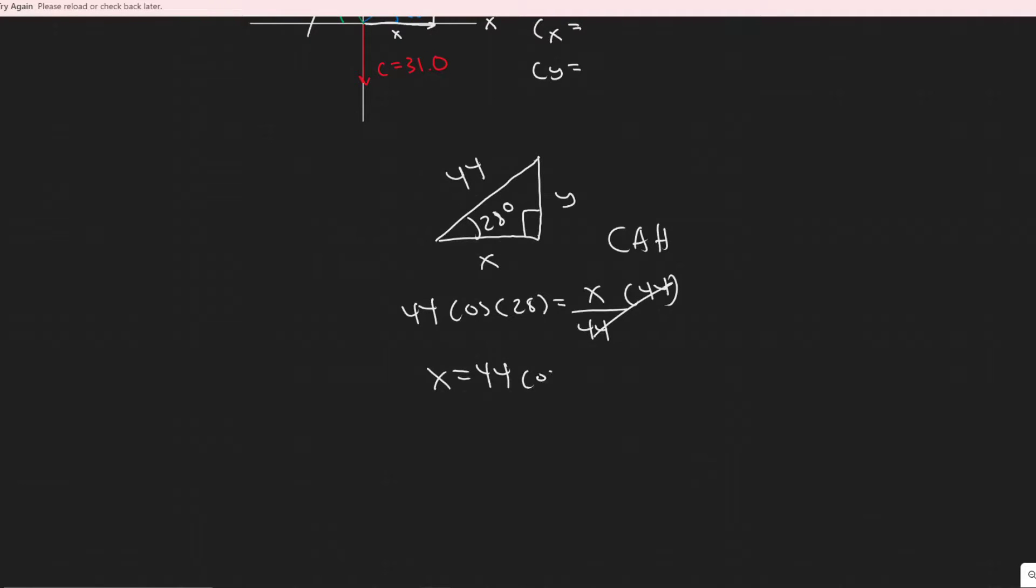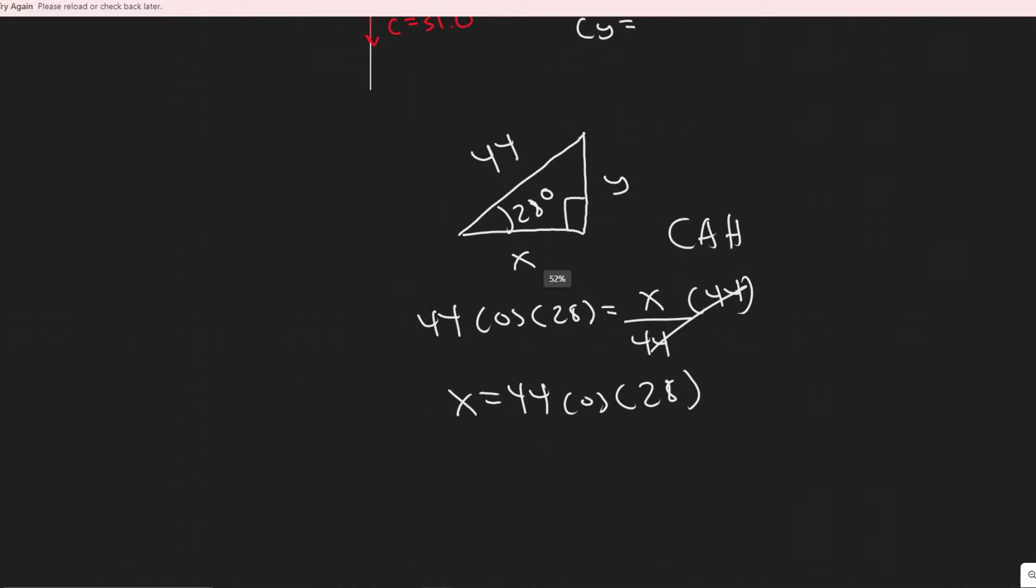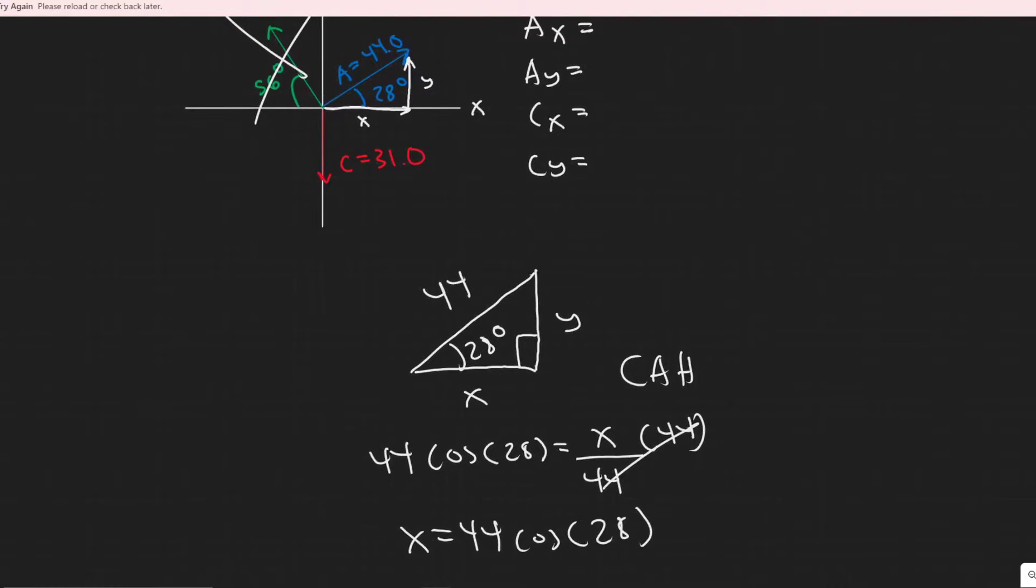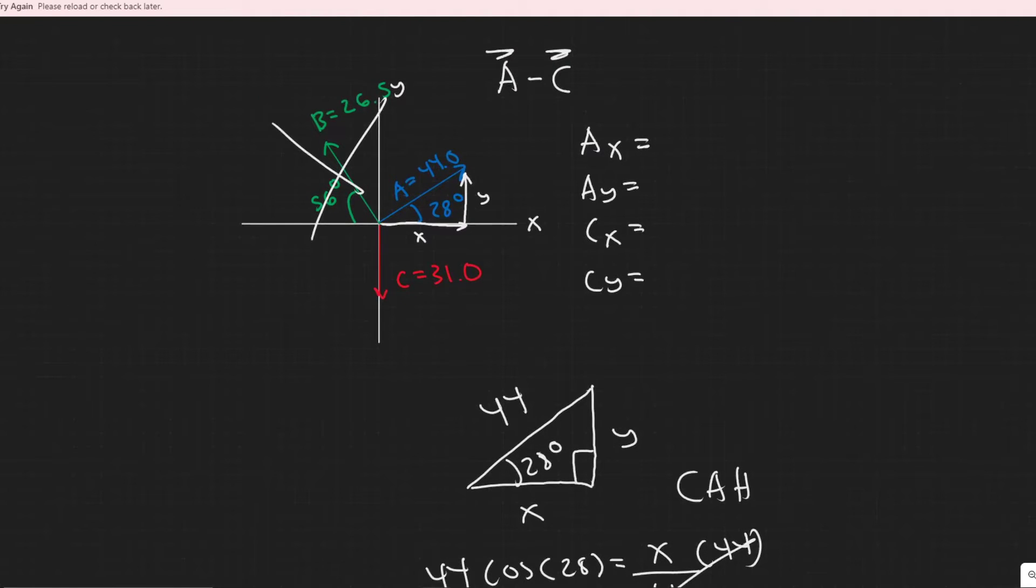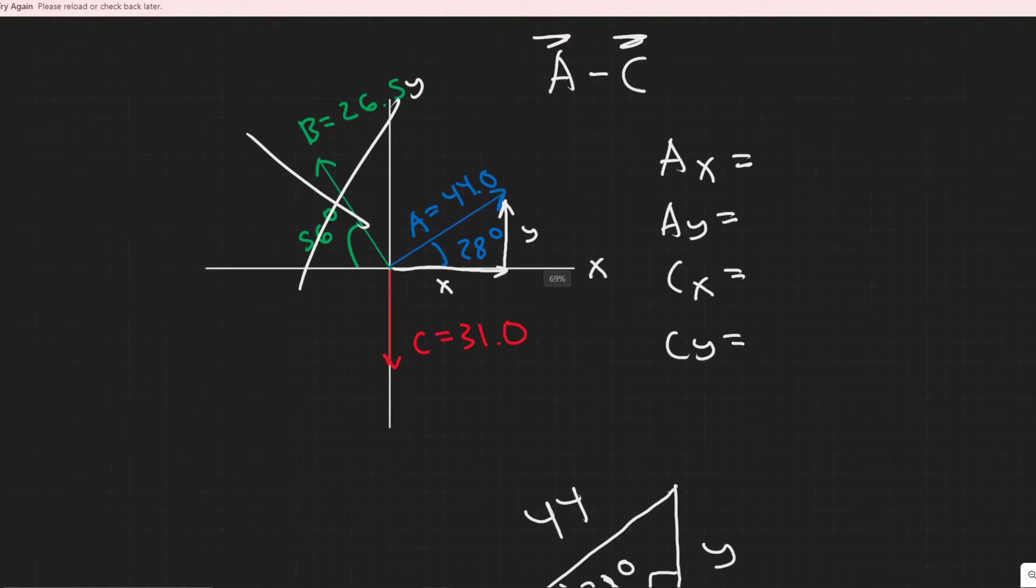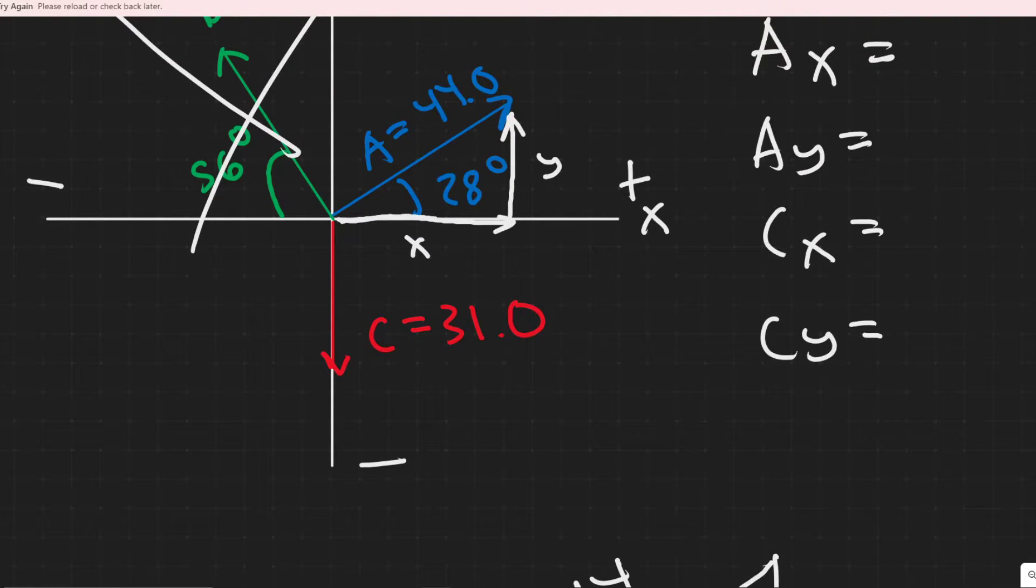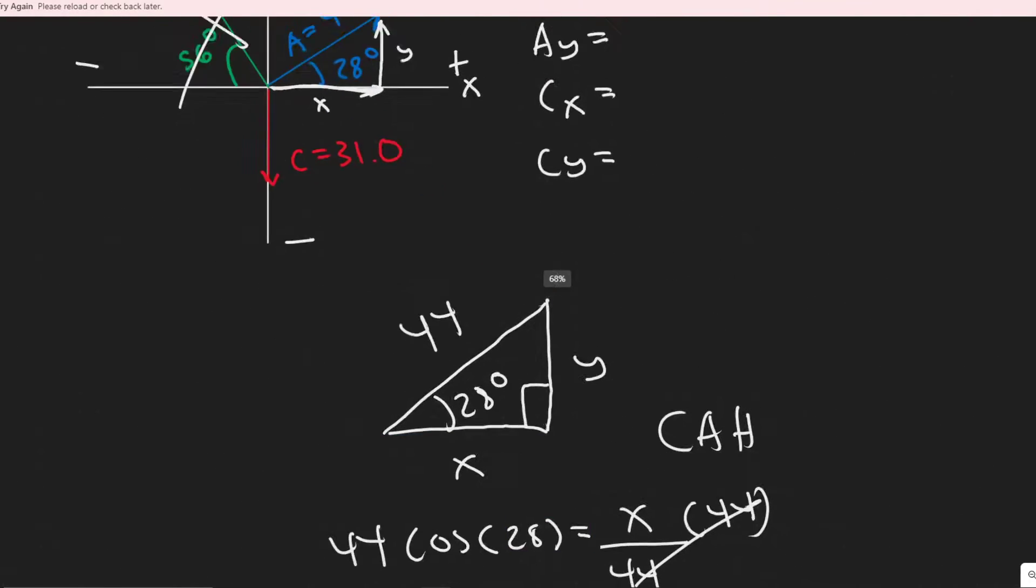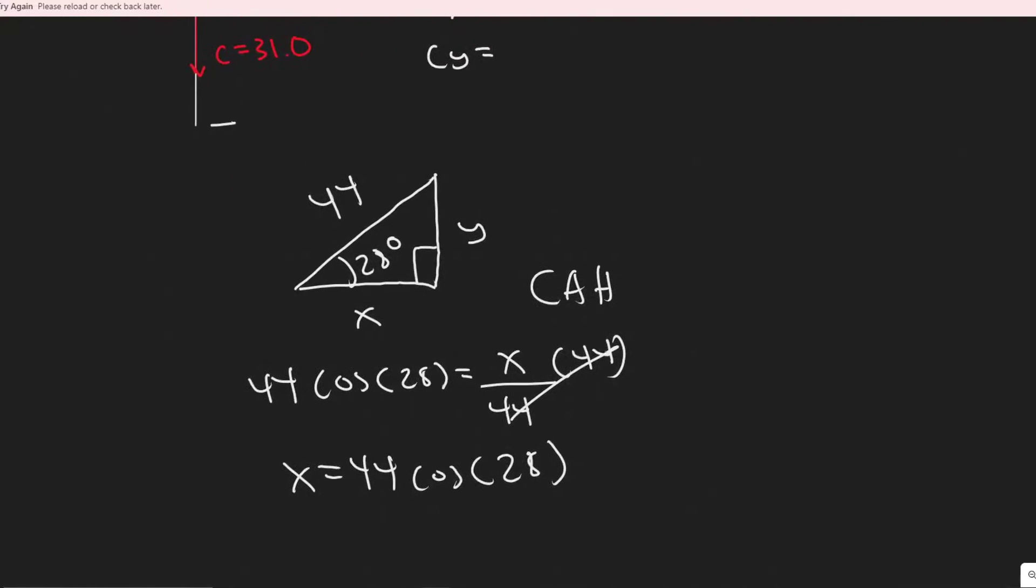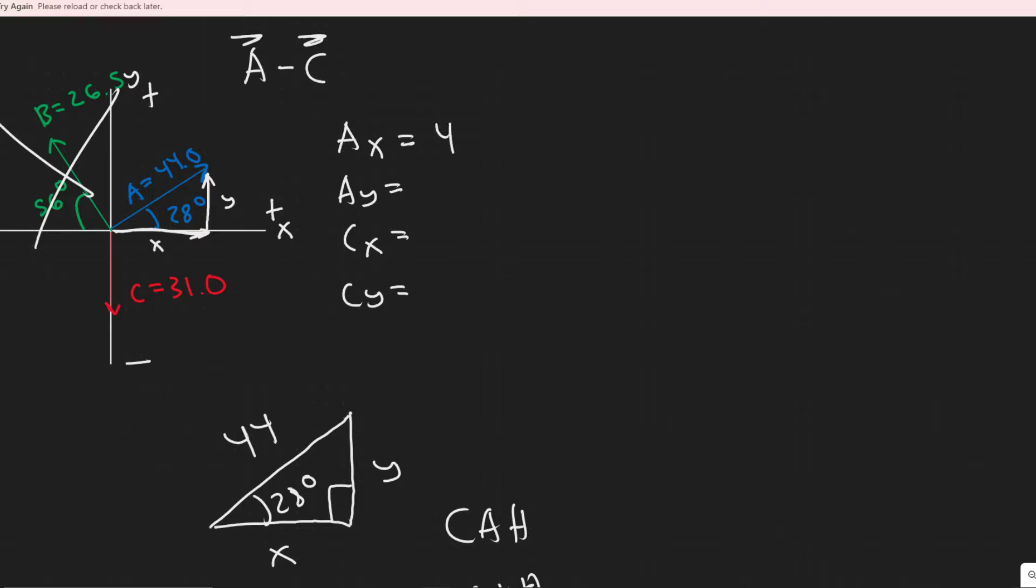That would be the x component of your A vector right there. Keep in mind that when you label it, you want to label it based on its direction. Generally, the way you do it is if it goes to the right, it's positive, left is negative. And then in terms of up and down, you like to label up positive and down negative. So this is your x component. But notice the direction it's pointing, you just follow along the direction the vector points. So the x would be in the positive x direction. So your A of x would just be positive this value. Keep in mind, if it was pointing the other direction, it would be negative though.